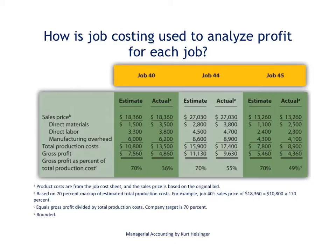What you're looking at here are three different jobs and the initial estimate for each job — that's what you see in this column — and the actual results for each job, with our revenue (the sales price), product costs, and resulting gross profit. This is the analysis of each of these three elements: the sales price, the product costs, and the gross profit.